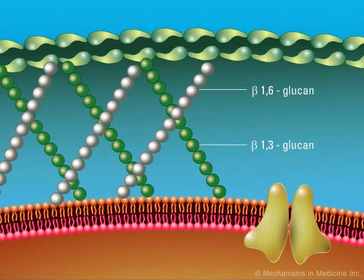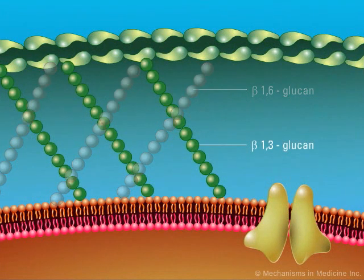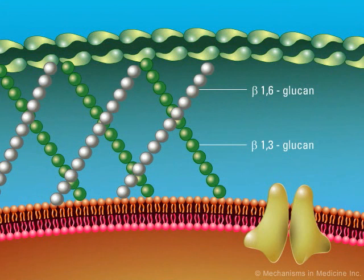Glucans, which are polymers of glucose, are the major components of the fungal cell wall, accounting for 30-60% of the cell wall of yeasts, such as Candida. The cell wall of filamentous fungi differs somewhat from yeast and includes a higher concentration of chitin, as well as in some, a novel linear beta-1,3/1,4 glucan.